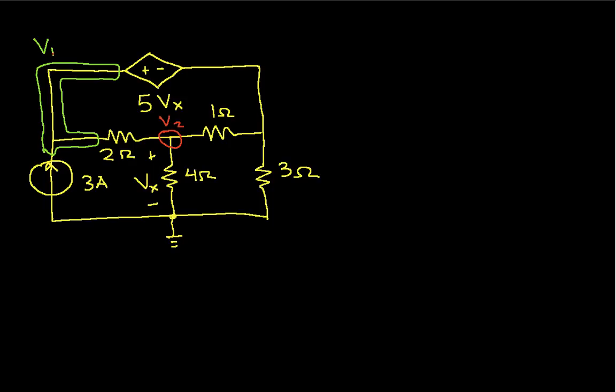And we have a third node here. We'll label this guy V3. So how do we proceed to do nodal analysis?